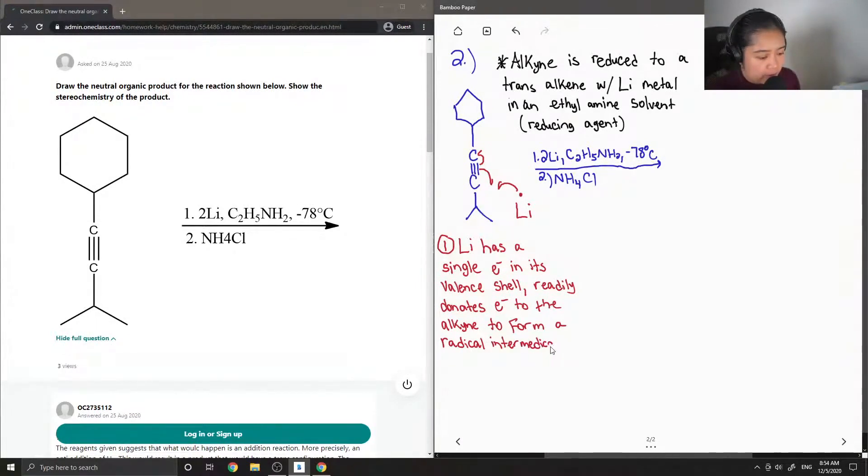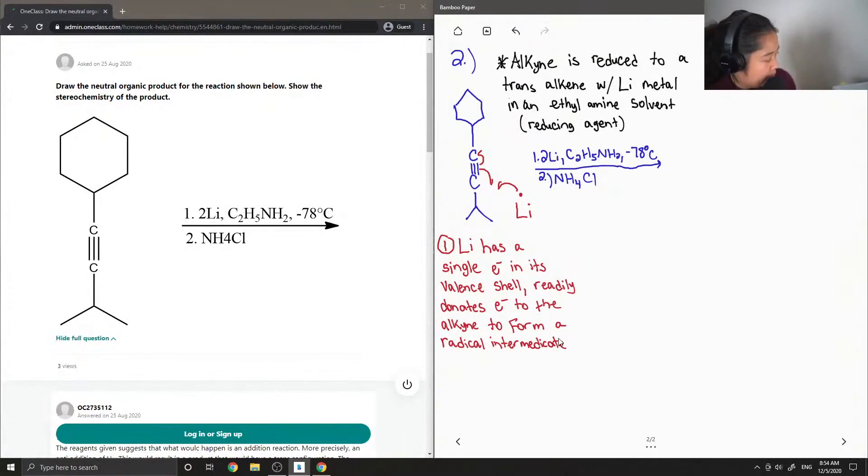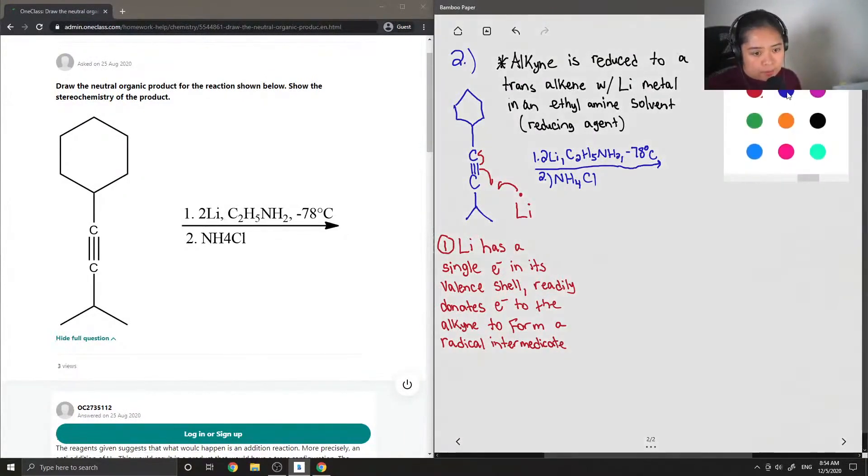So radicals are very unstable, and it'll just look like a single electron on one of our carbons. So I'll draw the intermediate down here. And that is our newly formed radical. The triple bond is now a double bond. And we have a negatively charged carbon that is stabilized with the lithium right now.